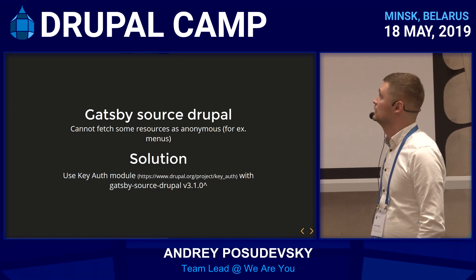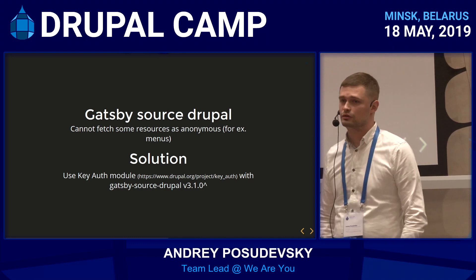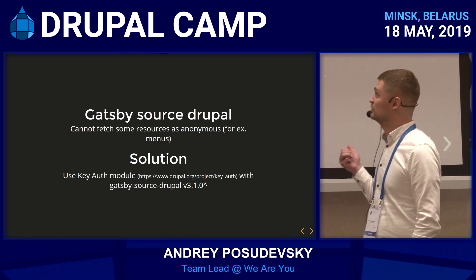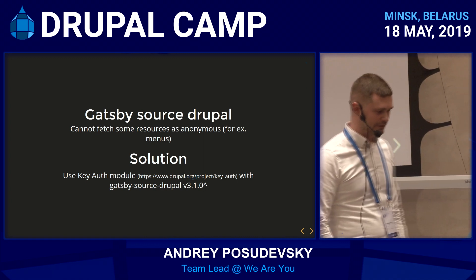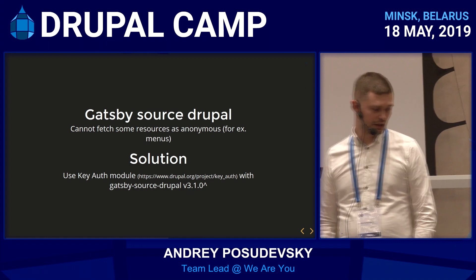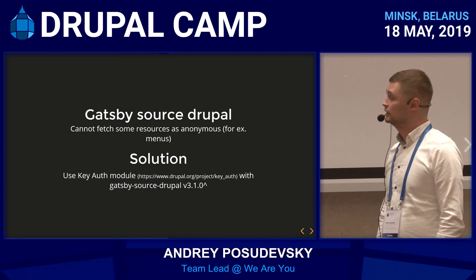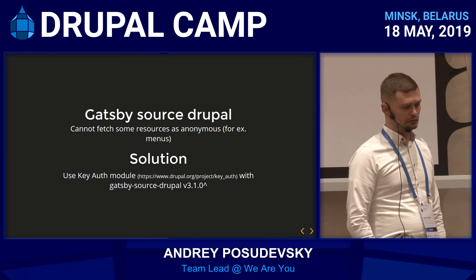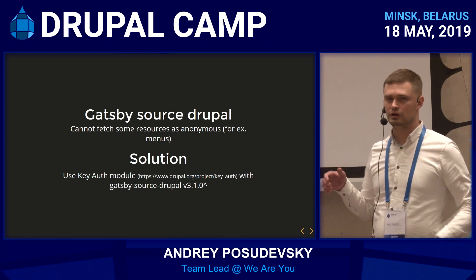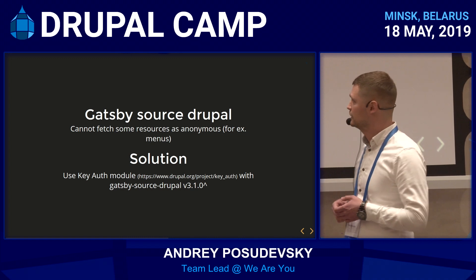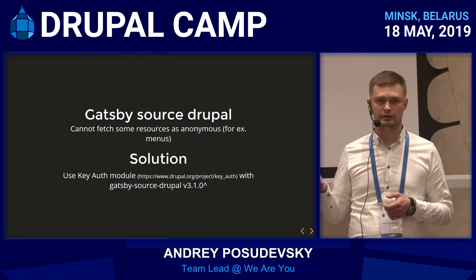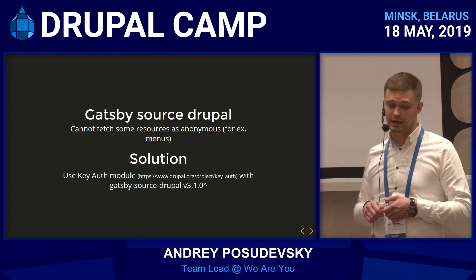Gatsby-source-drupal in combination with JSON API cannot fetch some resources as anonymous — JSON API just doesn't expose them. For example, menus. As a solution, you can use the Key Auth module in combination with gatsby-source-drupal version 3.9.0 and higher. The Key Auth module allows you to authenticate a user based on a key. You generate a key for a particular user, give it a role, then use this key as a GET parameter or header request. That's how you authenticate Gatsby to Drupal.